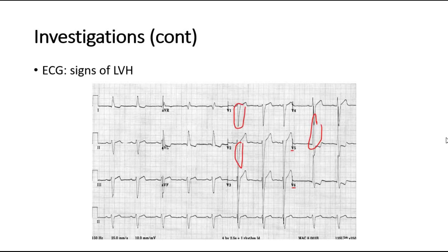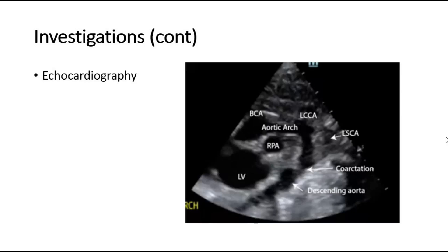The third investigation is echocardiography, which helps to evaluate the heart structure and function. We can also assess the blood flow pattern and determine where the coarctation is and its size. In this picture, the arrow indicates the site of the coarctation of the aorta.